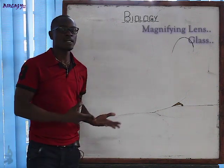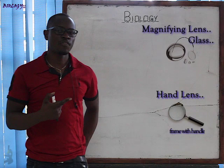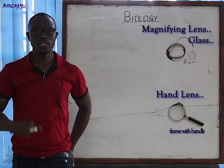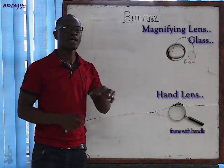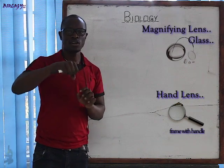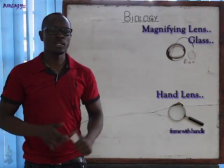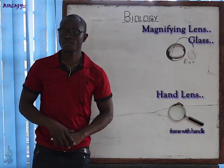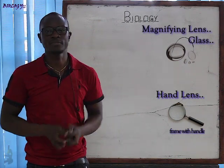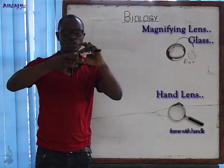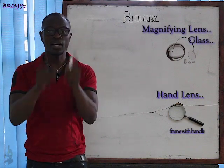We have the magnifying glass and we have the hand lens. Those two things are totally different. The magnifying lens — that glass, that lens — is called a magnifying glass. In short, a magnifying lens is thicker in the middle and thinner at the edges.